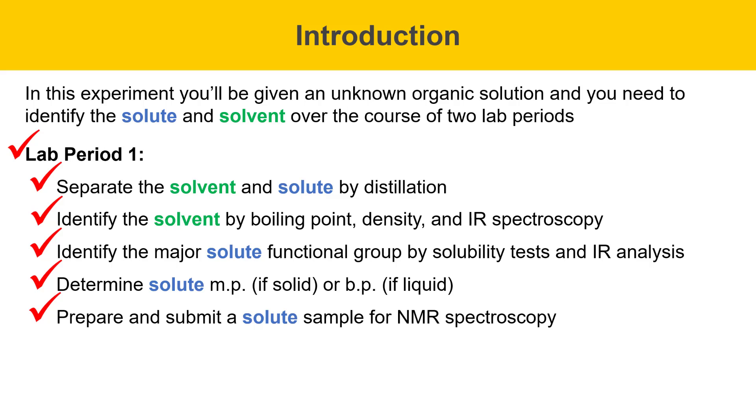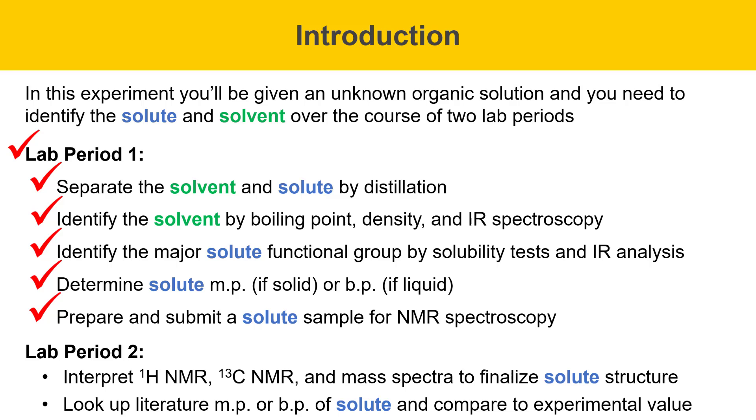Then we also prepared and submitted a solute sample for NMR spectroscopy. In the second lab period, you'll interpret your experimental proton NMR results, which will be emailed to you. You'll also be given a carbon-13 NMR spectrum and a mass spectrum to interpret to help finalize your unknown solute's structure. Then, you'll also look up the literature melting point or boiling point of your solute once you have a structure candidate and compare that to the experimental value that you acquired last time.